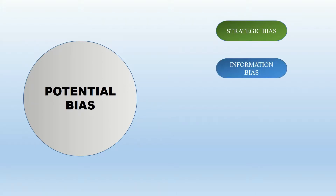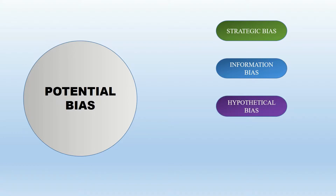Then there is information bias, where respondents might give wrong or incomplete information, resulting in biased results from the technique. There is also hypothetical bias. Under the Contingent Valuation Technique, researchers present a hypothetical situation and ask people to respond on their willingness to pay or accept, but the responses given for that hypothetical situation may be different from the responses people would actually give if that situation really occurred.